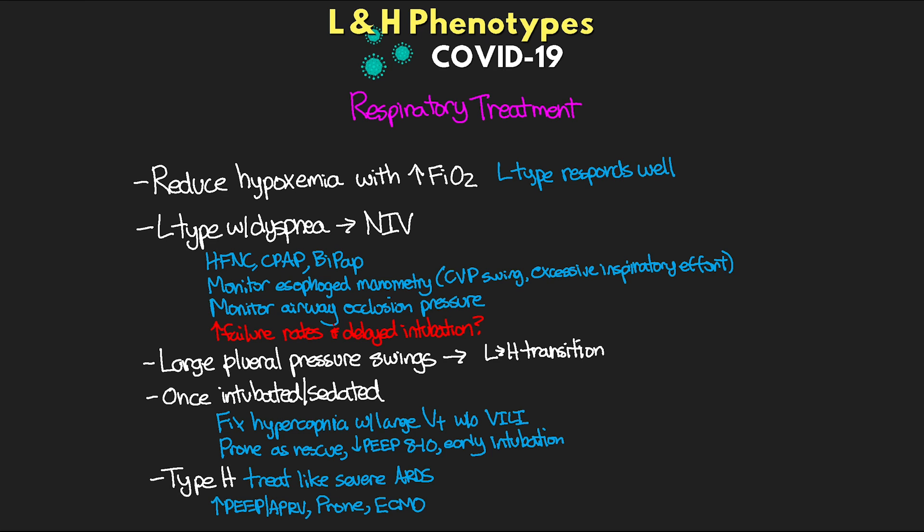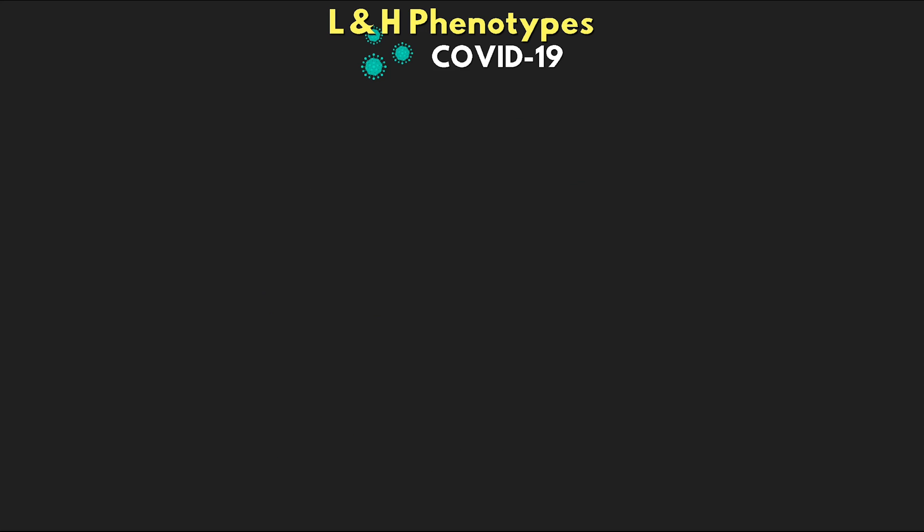For H-type patients, the recommendation is to treat this like severe ARDS — using high PEEP or APRV, utilizing prone positioning for all patients, and the possible use of ECMO. Those are the ways they've proposed treating these patients depending on the phenotype they're presenting with.